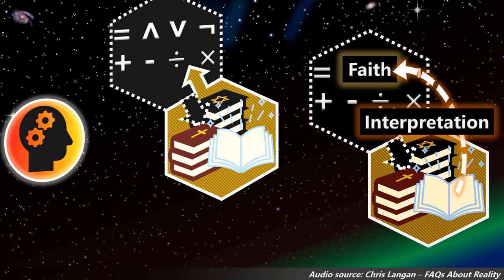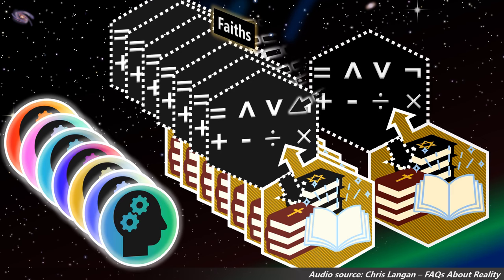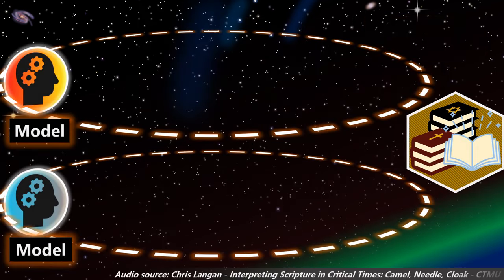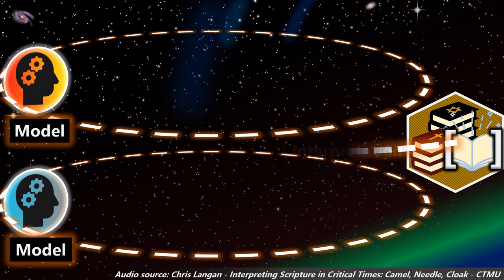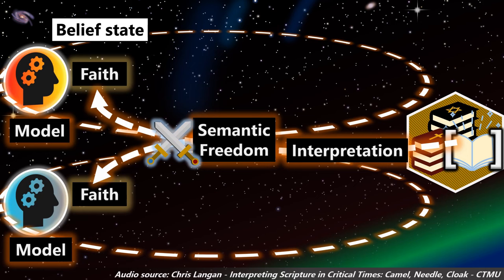faith has split into many interpretations and many conflicting doctrines and dogmas. Which looks bad, because it doesn't look like anybody has faith in the same thing. So how can you even say that it exists? Interpretation has degrees of semantic freedom, allowing interpretations to diverge. Some interpretations of Scripture are mutually contradictory.